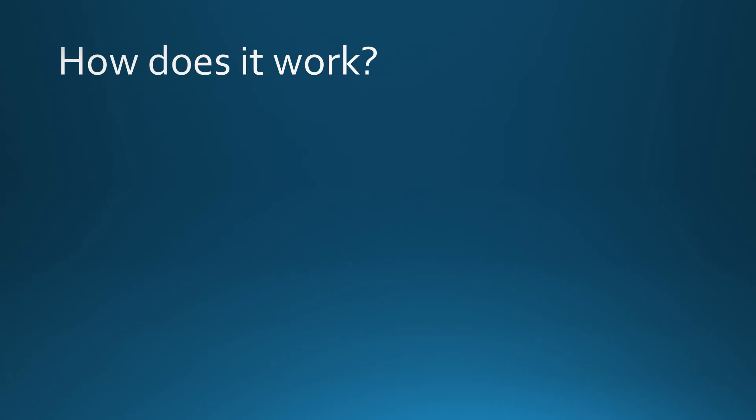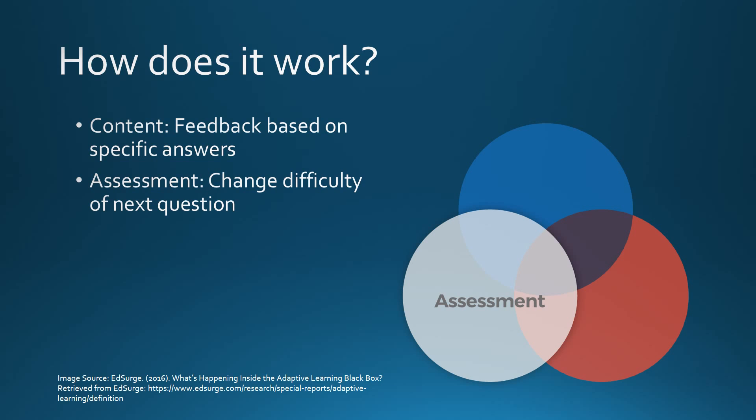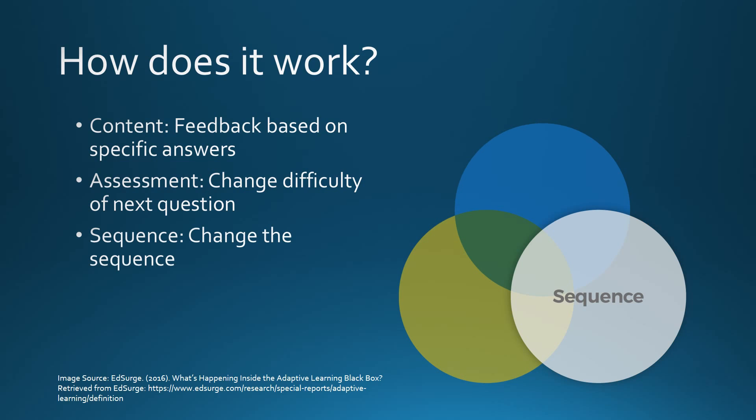There are three ways in which adaptive learning tools adapt or respond to learners in real-time. Based on a learner's specific answers, tools with adaptive content respond with hints, feedback, or other resources related to that area of content. Tools with adaptive assessment change the difficulty level of questions based on responses to previous questions. Tools using adaptive sequence collect real-time data and analysis to change the sequence of what the learner sees next.